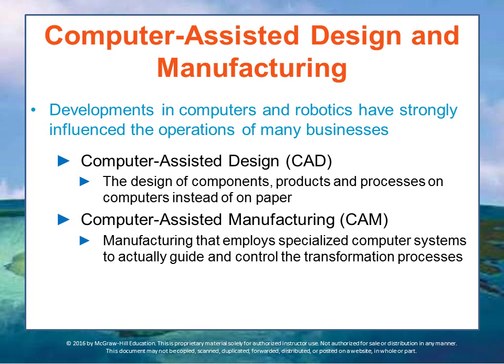Two developments have strongly influenced the operations of many businesses: computers and robotics. Computers have been used for decades on a relatively large scale since IBM introduced its 650 in the late 1950s. The operations function makes great use of computers in all phases of the transformation process.